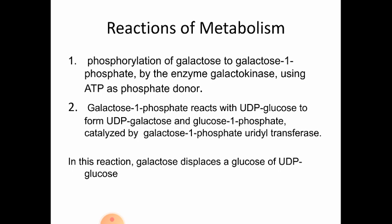The first reaction of galactose metabolism is phosphorylation of galactose to galactose-1-phosphate by the enzyme galactokinase, using ATP as the phosphate donor. By utilizing ATP, galactose-1-phosphate is formed from galactose.